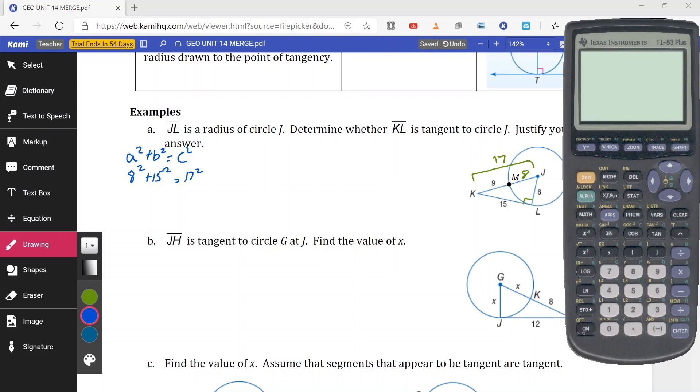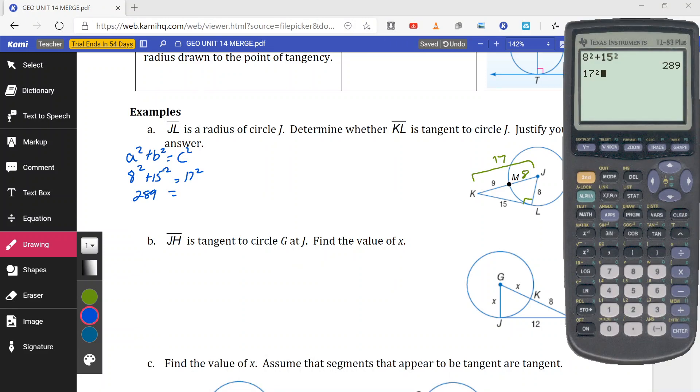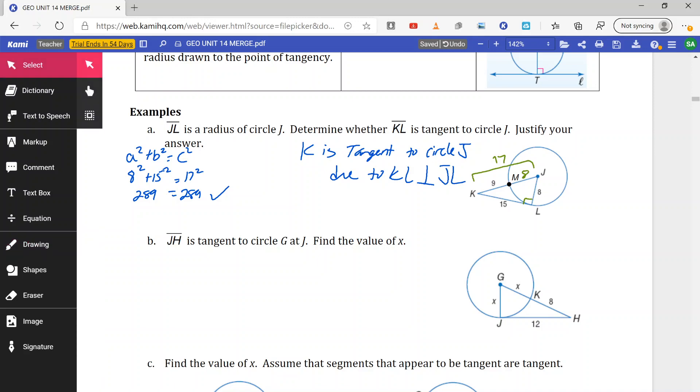So all we have to do is 8 squared plus 15 squared. So I get 289. And as long as 17 squared is 289, we're good. Gives me 289. So because we end up with the same thing, it checks out, so K-L is tangent to circle J due to K-L being perpendicular to J-L. So we can use that rationale to say we have a tangent. Again, right angle is created due to the fact that we prove the Pythagorean theorem works in this case.